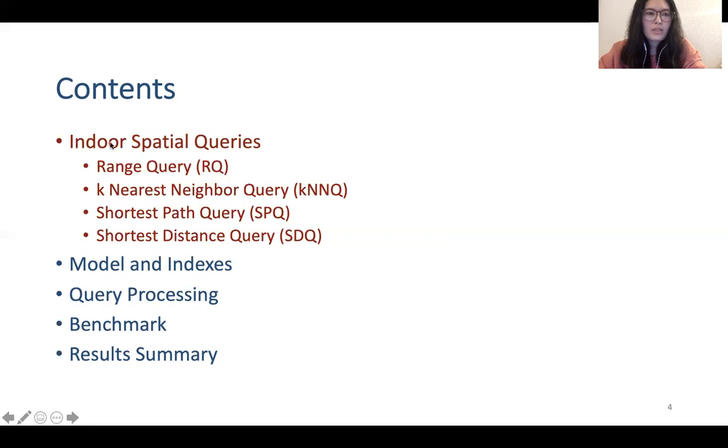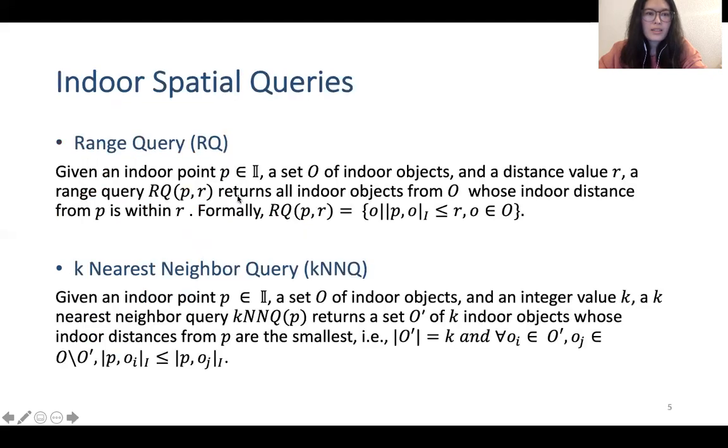First, let's talk about indoor spatial queries. The first one is Range Query. Given an indoor point p, a set O of indoor objects, and a distance value r, a Range Query returns all indoor objects whose indoor distance from p is within r. Then k-Nearest Neighbor Query is similar with Range Query. It returns k indoor objects whose indoor distances from p are the smallest.